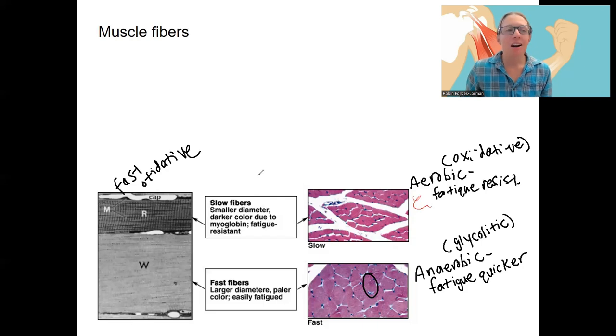So fast oxidative are kind of an intermediate between the other two. So I like to compare these two a little more specifically, and then we'll look at the intermediate one.